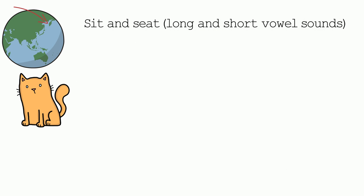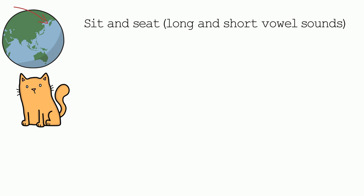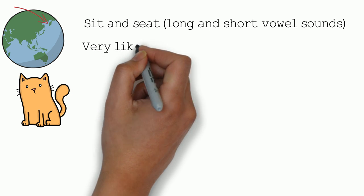Right, so one problem that Koreans have is between long and short vowels. For example, sit and seat, making sure that there is a difference between different vowel lengths.